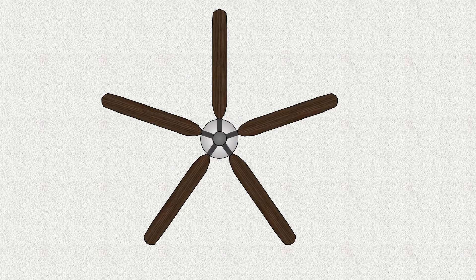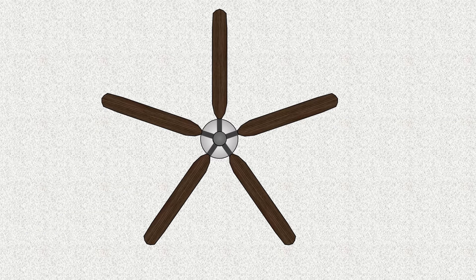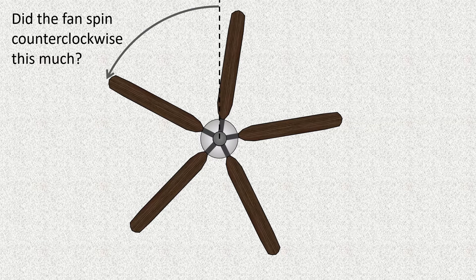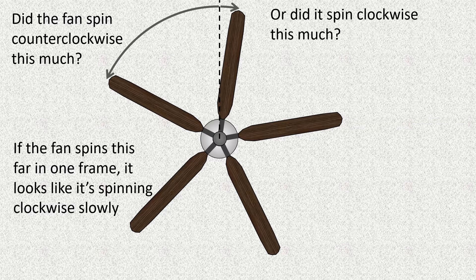But things get confusing if you speed up the fan too much. Suppose the fan is moving just fast enough that the blade at the top will move to where the next blade was in one frame. Since we can't tell one blade from another, it would look like the fan isn't moving at all. Now look at what happens when the fan is moving just a little bit slower — the blade at the top moves almost to the position of the next blade in one frame, so it looks like the fan is spinning slowly in a clockwise direction.